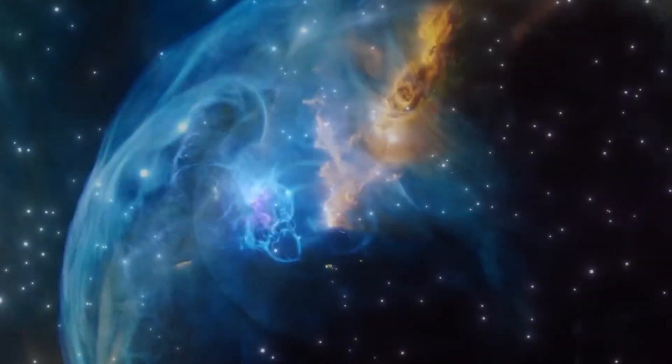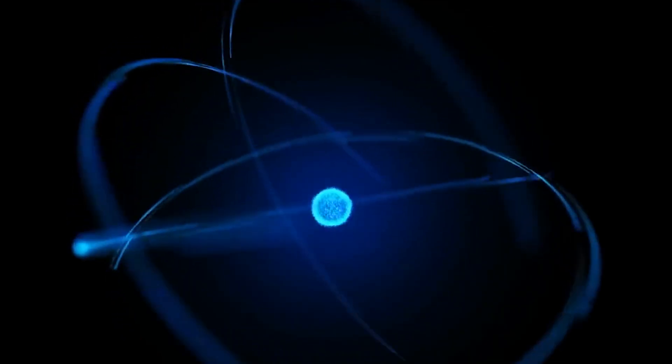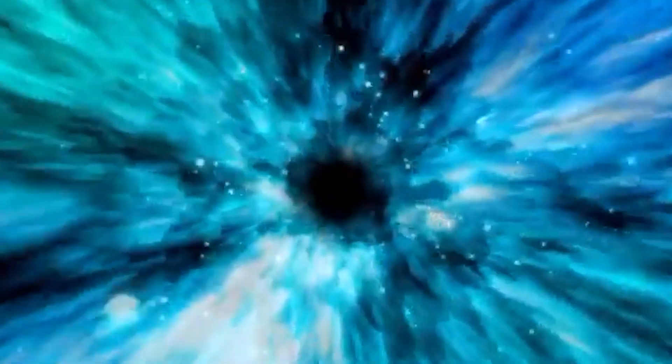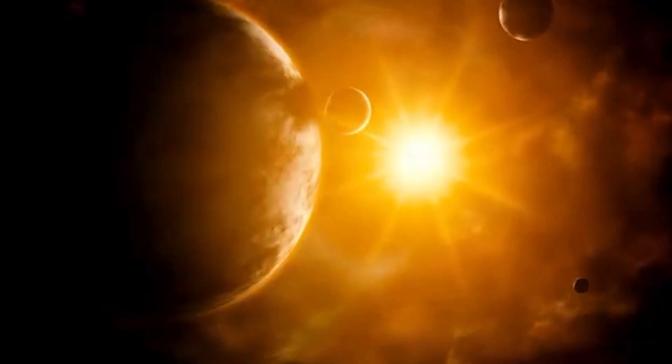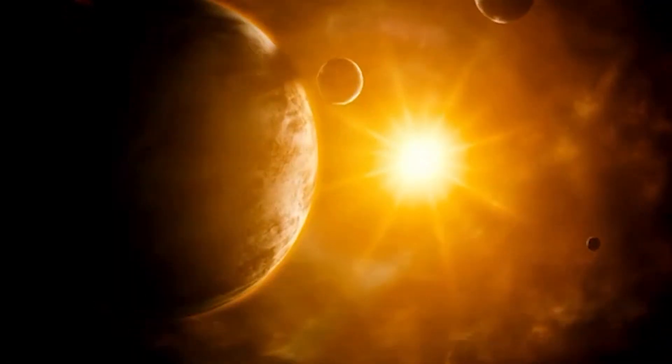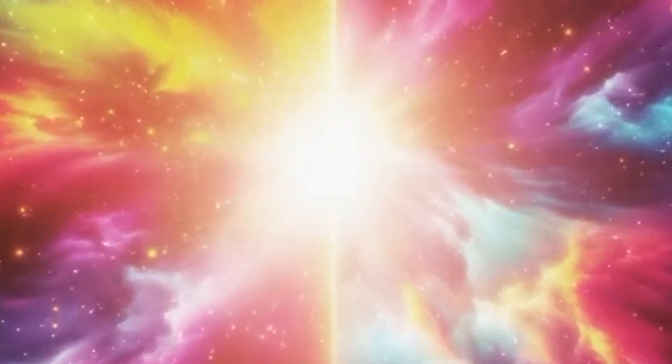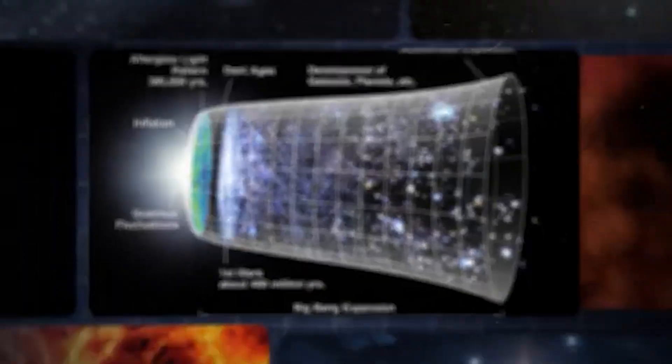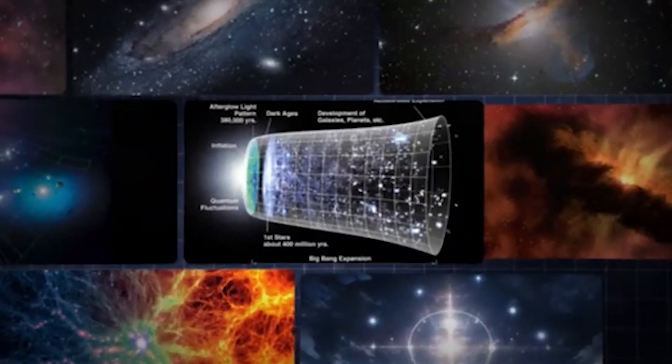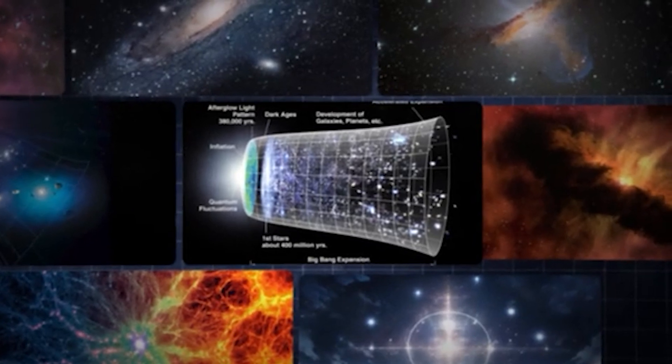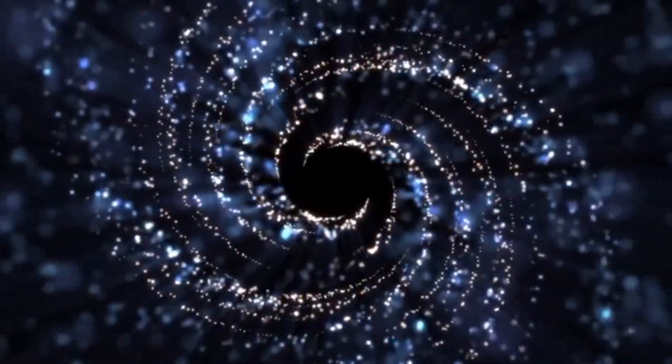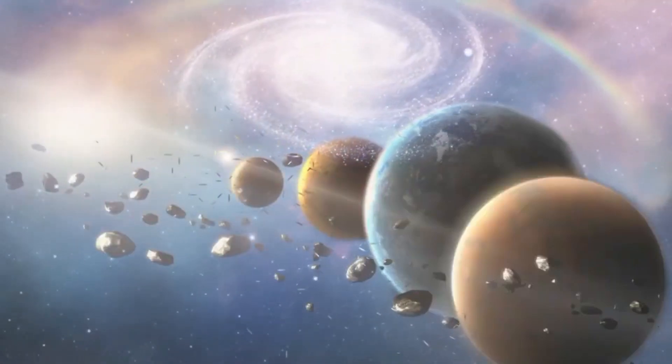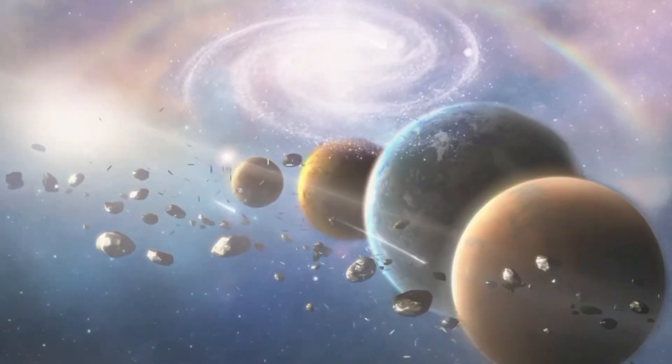Then there's the possibility that before the Big Bang, the universe existed in a radically different form. Some physicists have proposed a pre-geometric phase, a state where space and time as we understand them didn't exist. Instead, what existed was pure information, a tangled network of quantum relationships without direction, distance, or duration. No past, no future, no space to move through, and no time to mark movement. It's not that there was something before the Big Bang in the traditional sense. It's that the Big Bang was a transformation, a cosmic phase change.